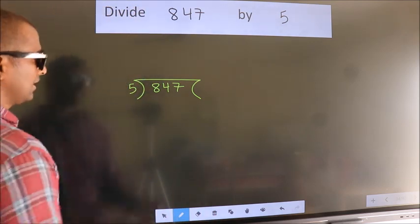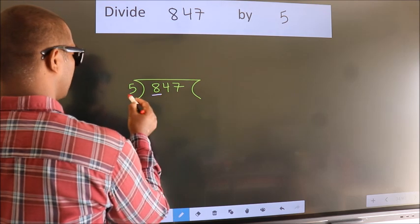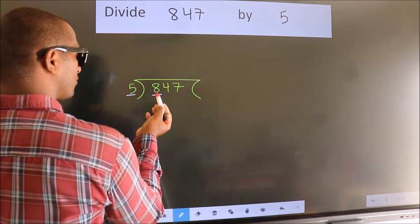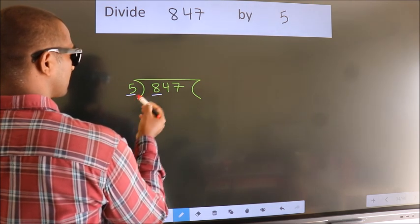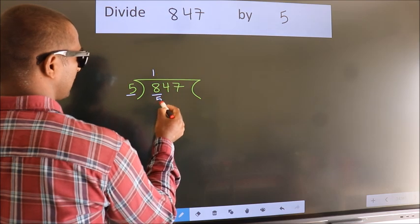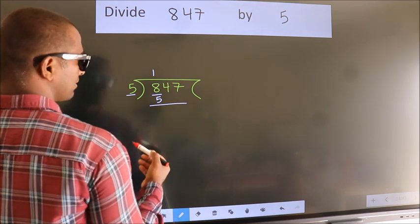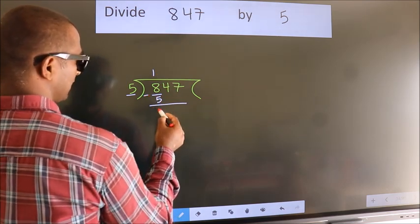Next, here we have 8, here 5. A number close to 8 in the 5 table is 5 times 1 equals 5. Now we should subtract. We get 3.